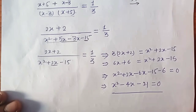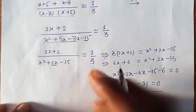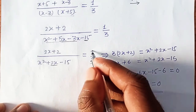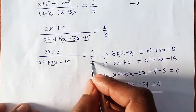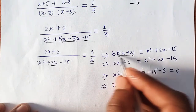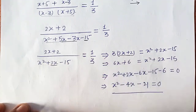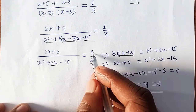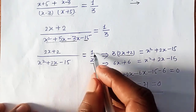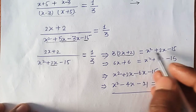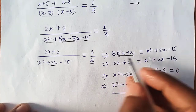Now we cross multiply. 3 multiplied into 2x plus 2, and 1 multiplied into the denominator. So 3(2x+2) = x squared plus 2x minus 15, which gives x squared plus 2x minus 15 minus 6x minus 6 = 0, that is x squared plus 2x minus 50 = 0.